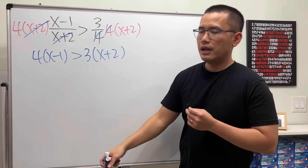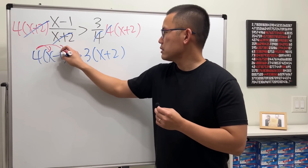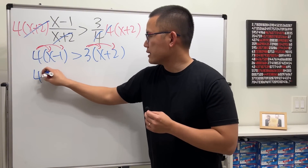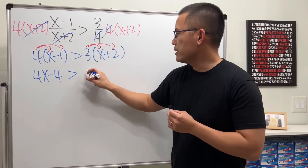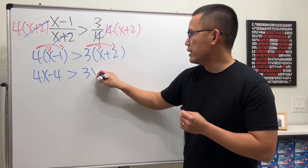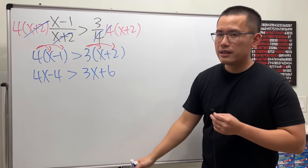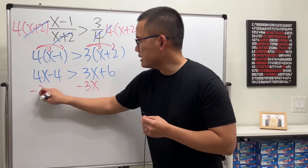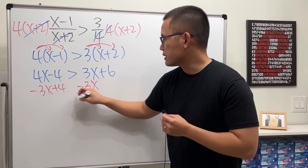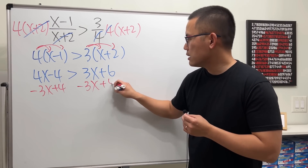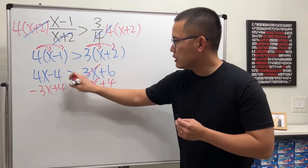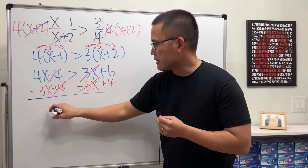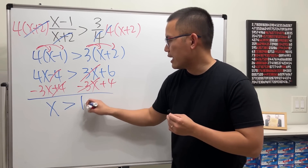Distributing, we get 4x minus 4 greater than 3x plus 6. Moving things around — subtract 3x from both sides and add 4 to both sides — and we get x is greater than 10.